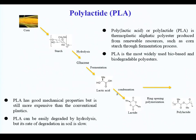Polylactide is the most widely used biobased and biodegradable polyester. It can be prepared from fermentation of corn starch — hydrolysis followed by fermentation, then condensation, and once we have the lactide, by ring opening polymerization we get polylactide. It has very good mechanical properties but is still more expensive than conventional plastic. It can be easily degraded by hydrolysis, but the degradation rate inside is very slow. So we have two issues: it is expensive and the degradation rate is not fast enough.